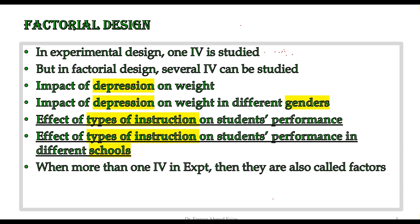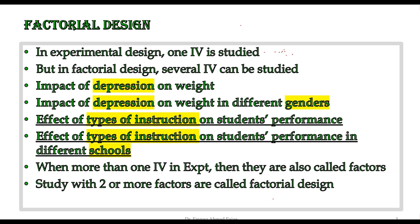In experimental design, independent variables are sometimes called factors. In factorial design we have more than one independent variable, meaning we study two or more factors. Therefore the name 'factorial design' — it is an experimental design in which we have different factors and we investigate the influence of those different factors on the dependent variable.